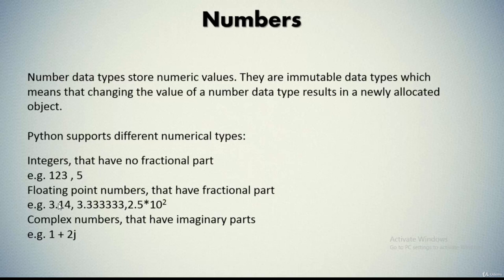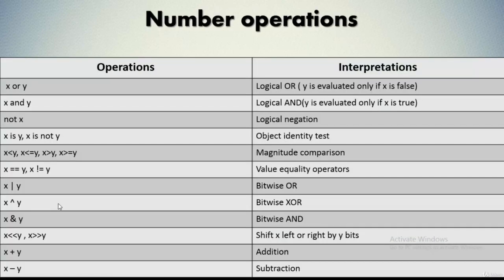Then we have complex numbers. As you know, complex numbers have real parts and imaginary parts. They are of the form a + bj, where a and b are floats and j represents the square root of minus one. The real part is a and the imaginary part is b. Complex numbers are not used much in Python programming, although the option is available to us.